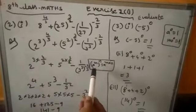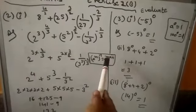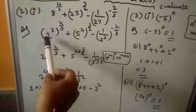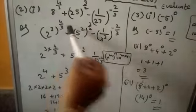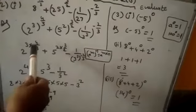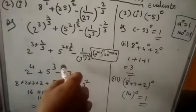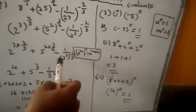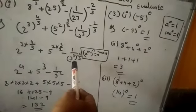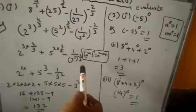There is one formula: a to the power of m, whole to the power of n, equals a to the power of m into n. We have to apply this formula here. So: 2 to the power of 3 into 4/3, plus 5 to the power of 2 into 3/2, minus (1/3) whole to the power of -2/3.